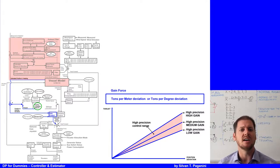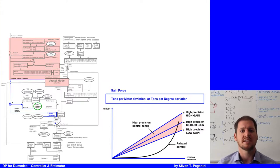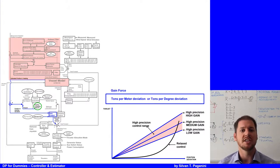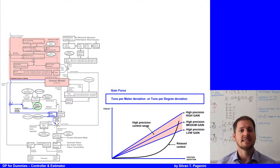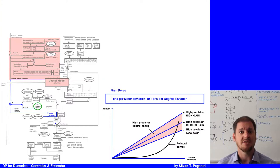The linear model is referred to as high precision control, but there are also non-linear models like relaxed control and green control. The relaxed control uses the thrusters more smoothly at the expense of station keeping accuracy. However, this type of control cannot guarantee that the vessel will stay within the operational area and is only applicable for calm weather conditions.